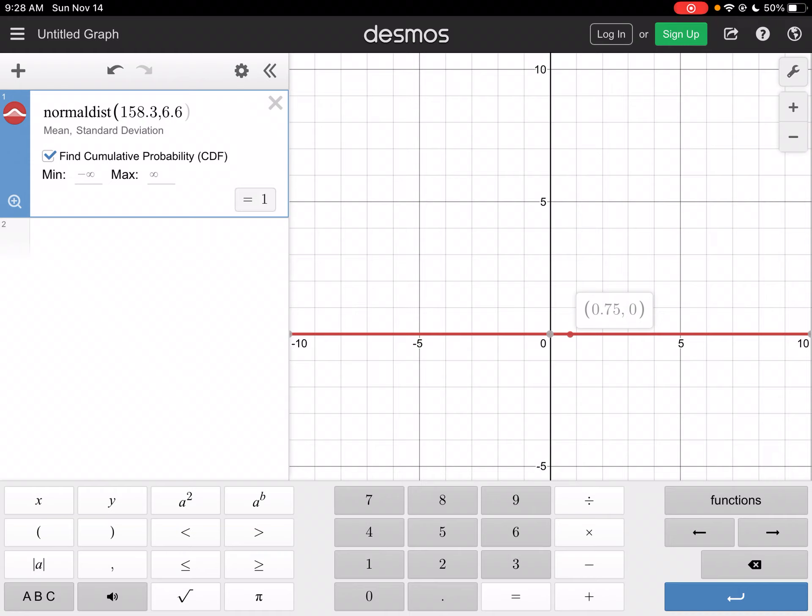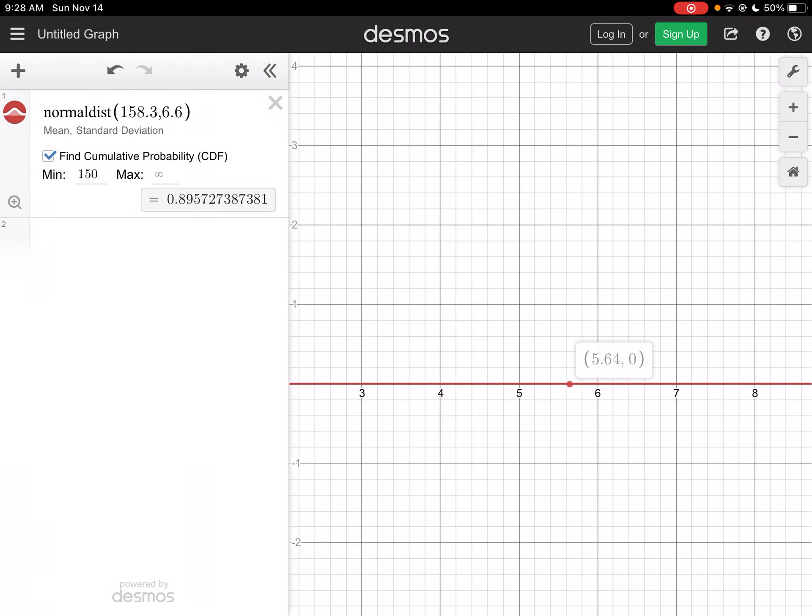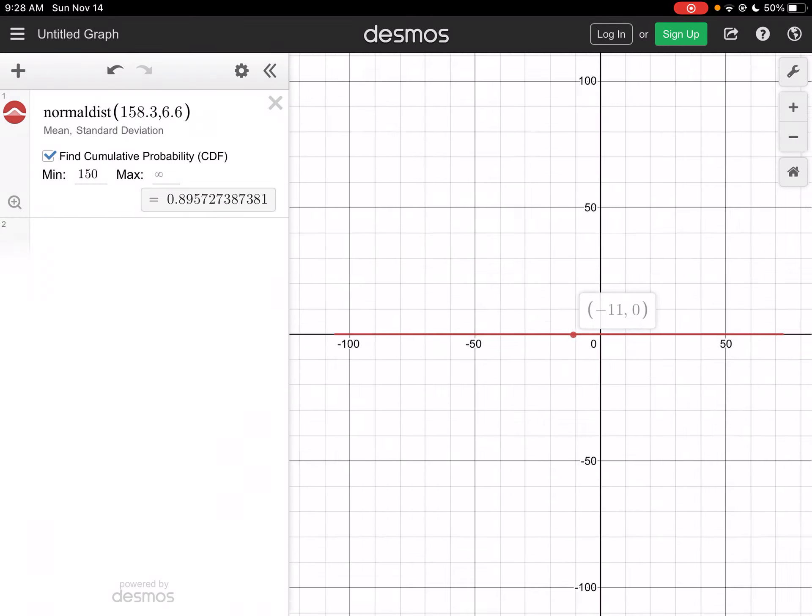I want to find the cumulative probability. And then I want it to be to the right of 150. So I'm going to go from 150 to my maximum, which is, again, notice I get the same answer. The only problem with this, I can't see that curve very well, can I?